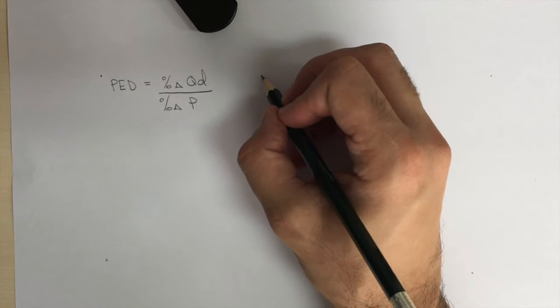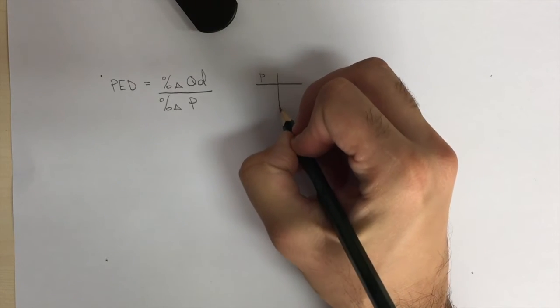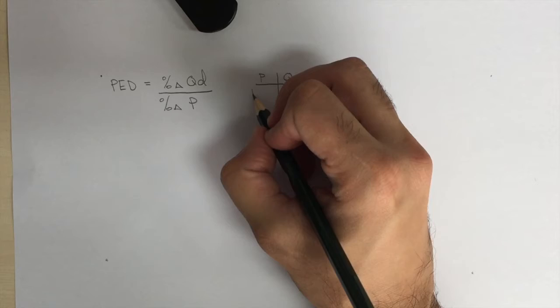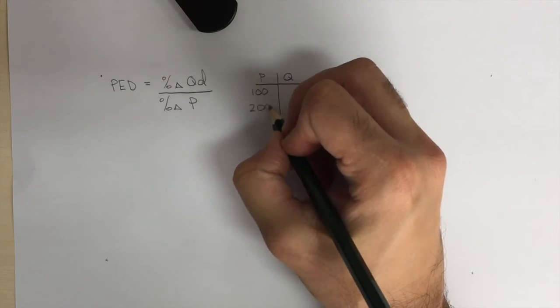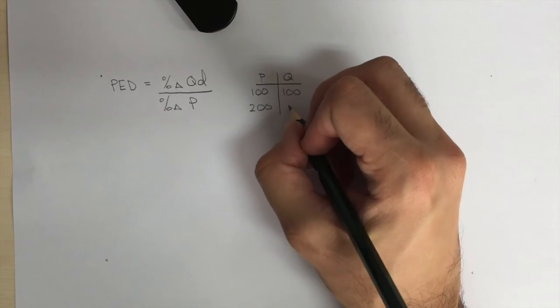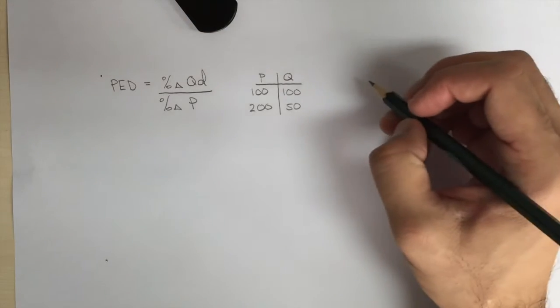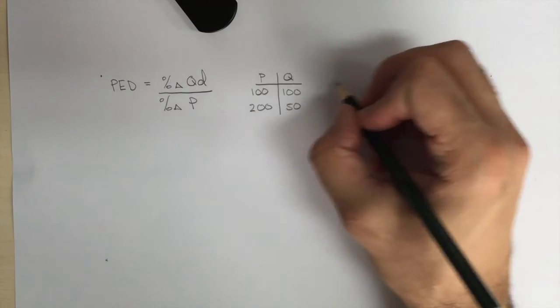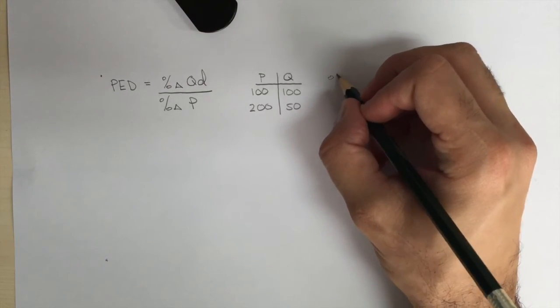Now, to do an example, we're going to lay out a very simple table of price and quantity. The first price is going to be $100, raising to $200, and at $100 we're going to sell a quantity of 100. At a price of $200, we're going to sell a quantity of 50.